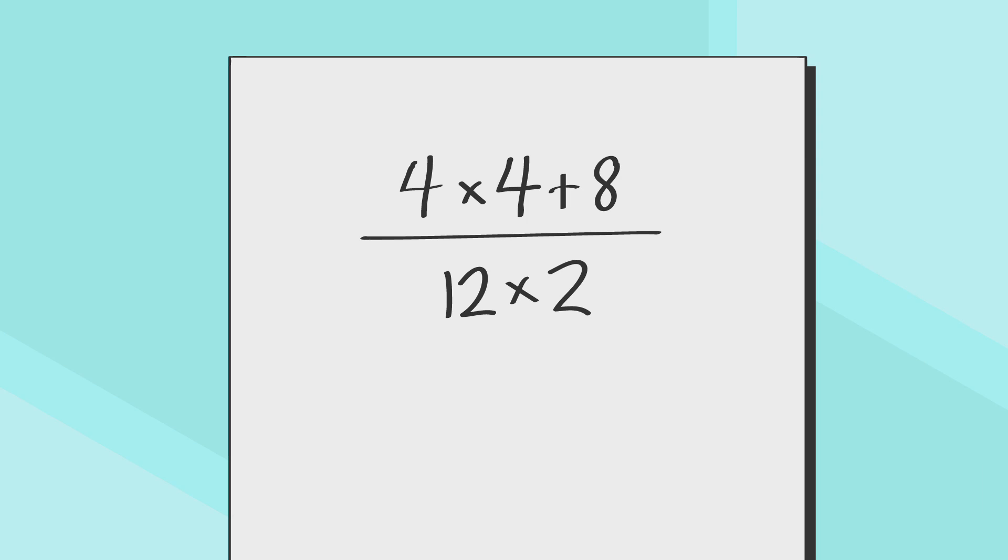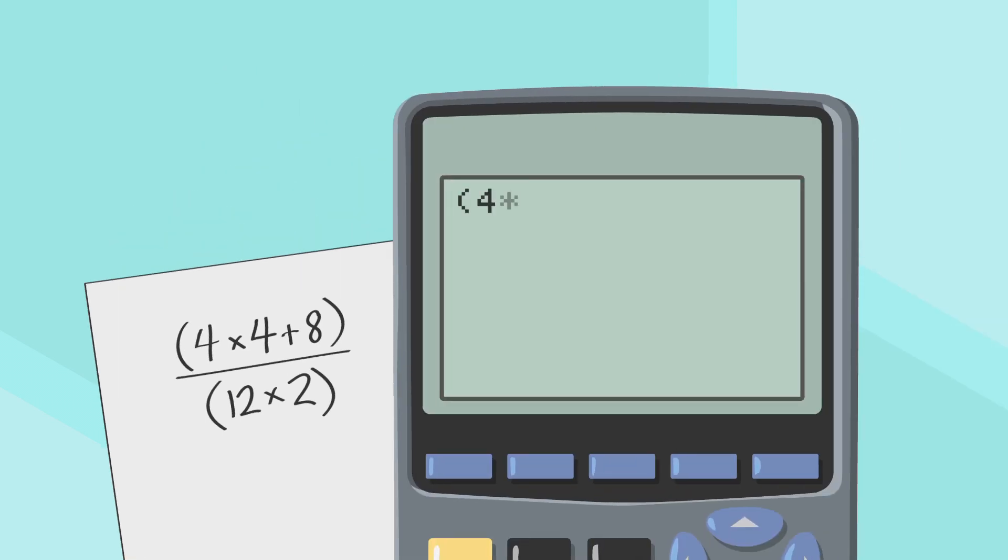Another way around the problem we just talked about is to put the numerator and denominator into parentheses. By grouping the top and the bottom, we make sure that they're done at the same time.